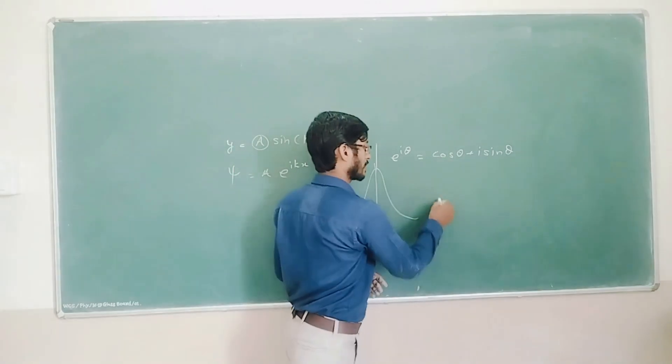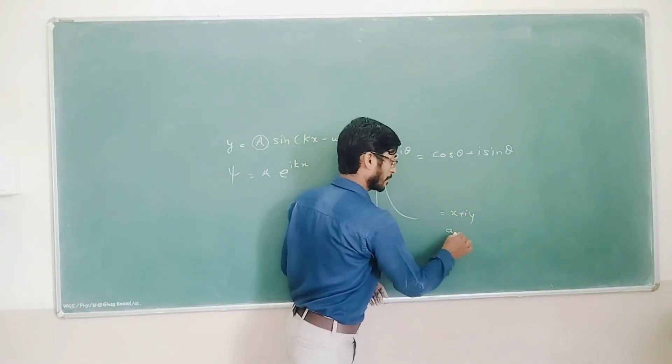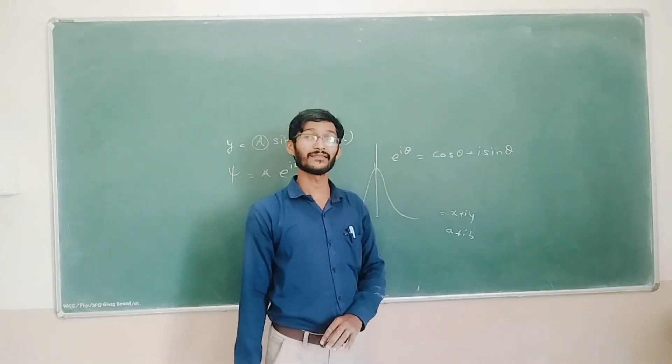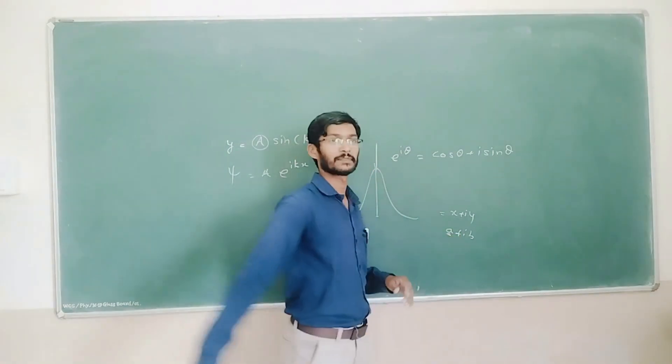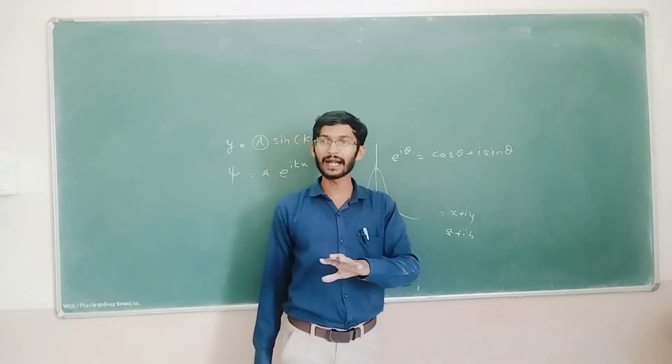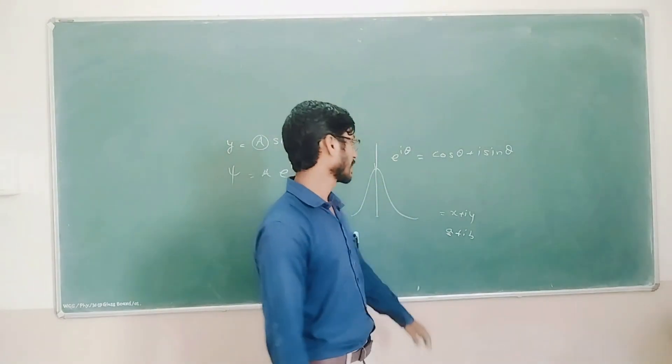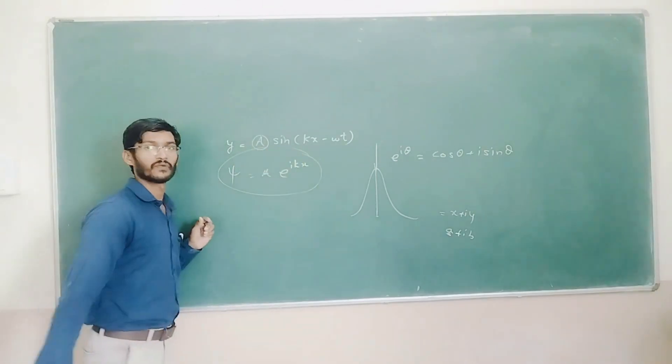And when we operate some operator on this to find out the values of some physical parameters, physical variables, and if I got x + iy or a + ib, then what we do - because this is physical, this is the real wave - therefore we only take this part. So complex part is because of mathematical easiness, some simplicity, therefore we take this part.